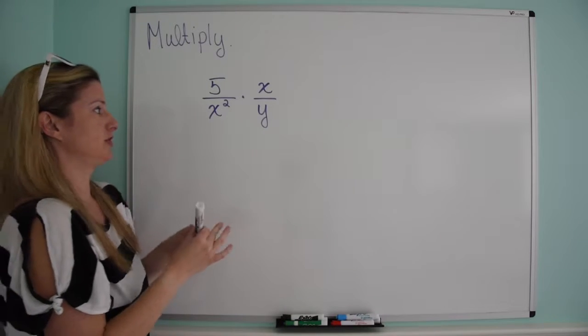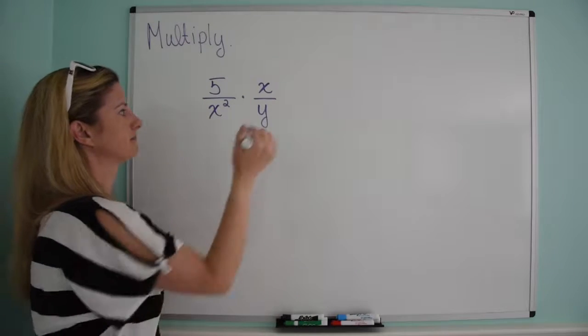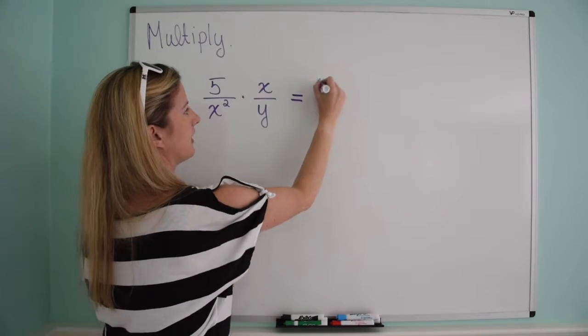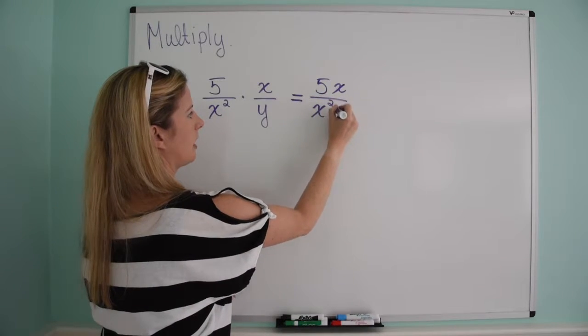The simplest way to do this is because it's multiplication, we can just multiply across the top and across the bottom. So we are looking at 5 times x is 5x over x squared times y is just x squared y.